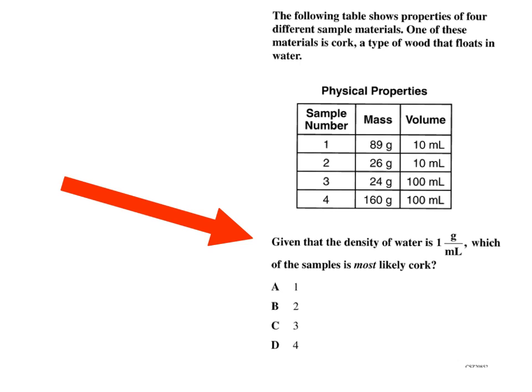It says, given that the density of water is one gram per milliliter, which of the samples is most likely cork? Well, if you know cork actually floats on water because it's more buoyant—in other words, it's going to be less dense than water—